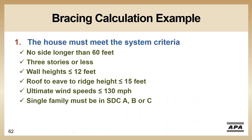There are dimensional and location criteria: no side longer than 60 feet, three stories or less, wall height less than or equal to 12 feet, roof eave to ridge height limited to 15 feet, ultimate wind speed 130 mph or less. For single family, you must be in seismic design category A, B, or C; townhomes are limited to seismic design categories A or B.